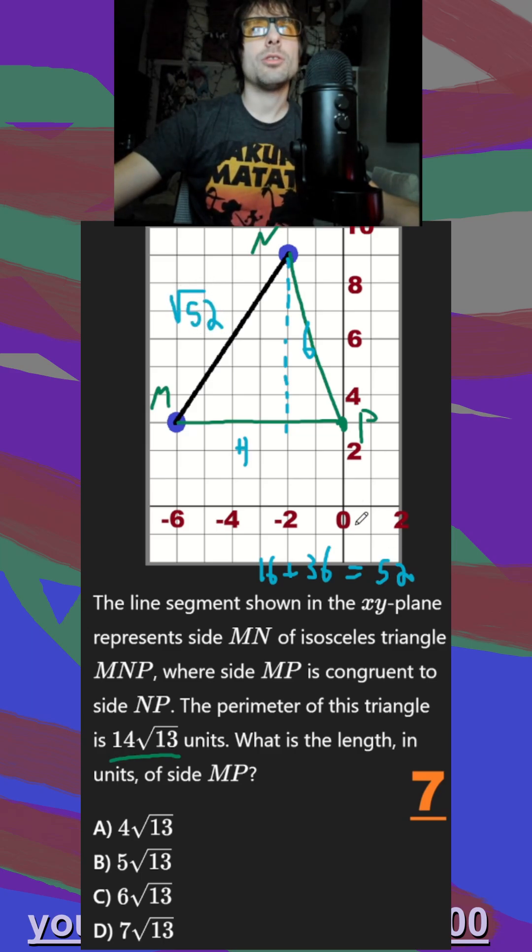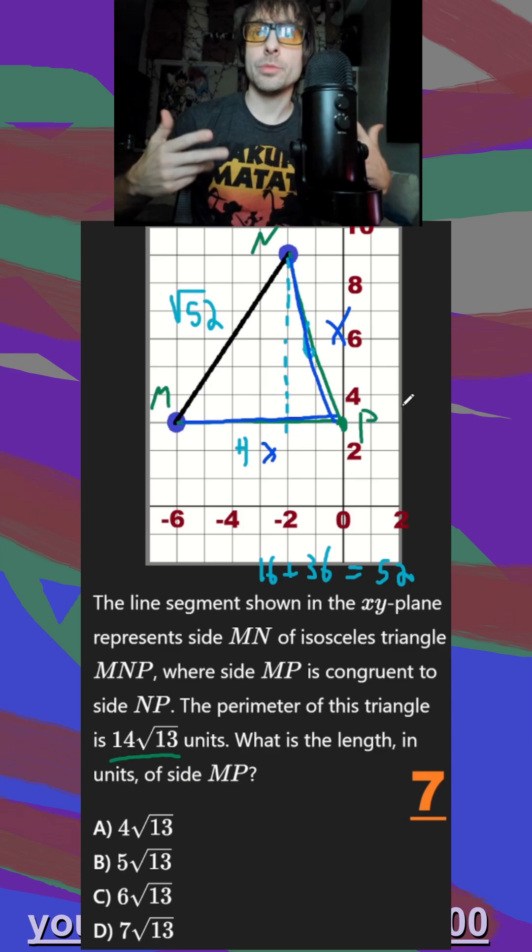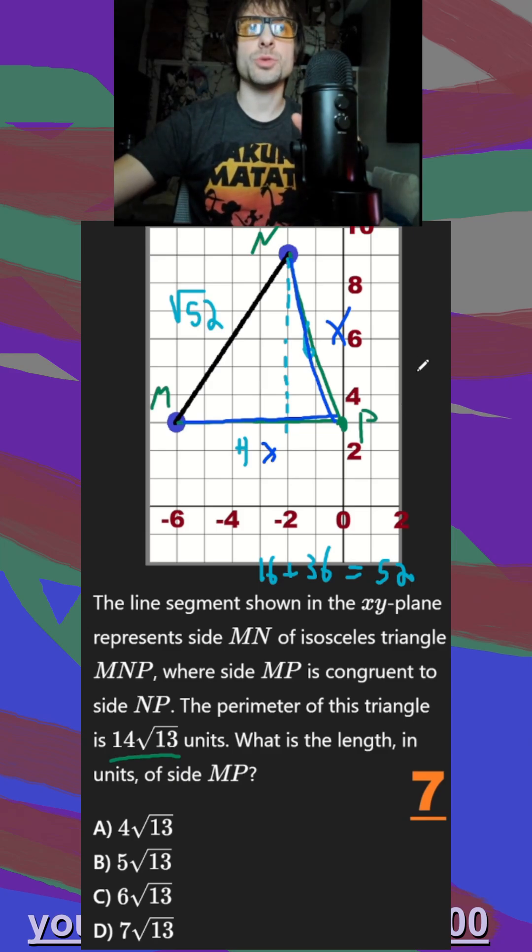And then we know that NP and MP are equal to each other. So we could call each of those maybe something like this side is x, and this side is x. So my final equation for my perimeter is √52 + 2x is going to be equal to 14√13.